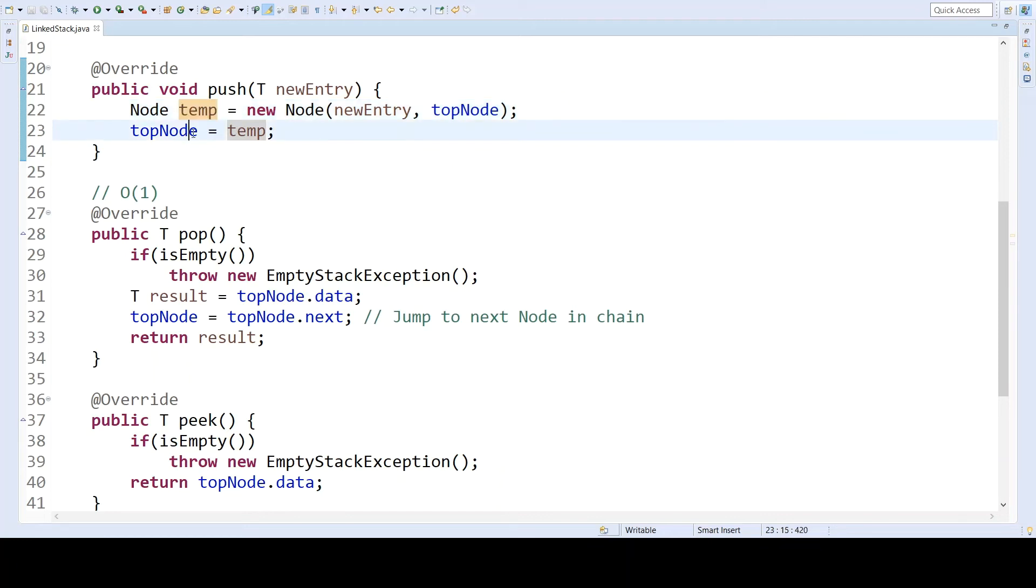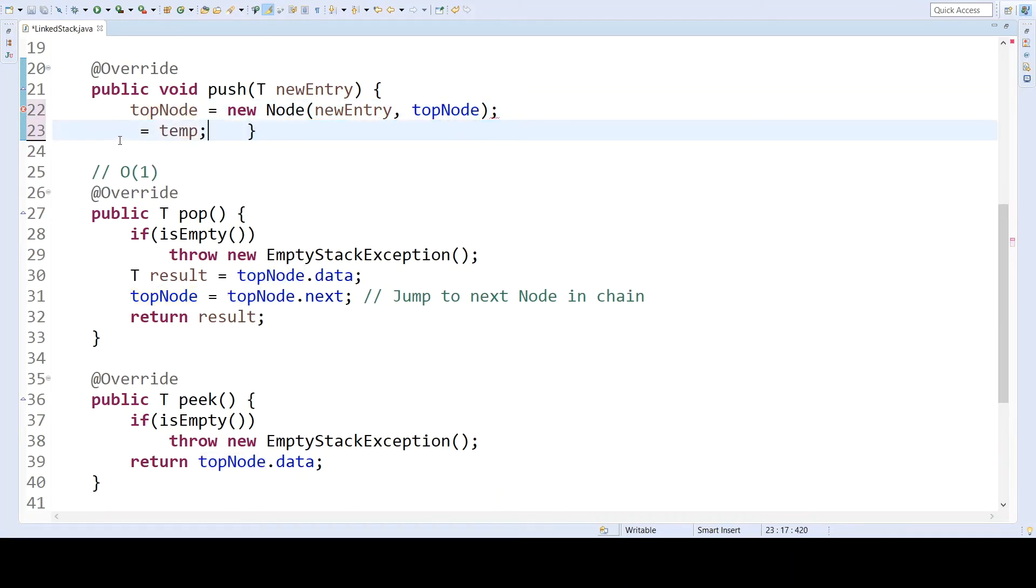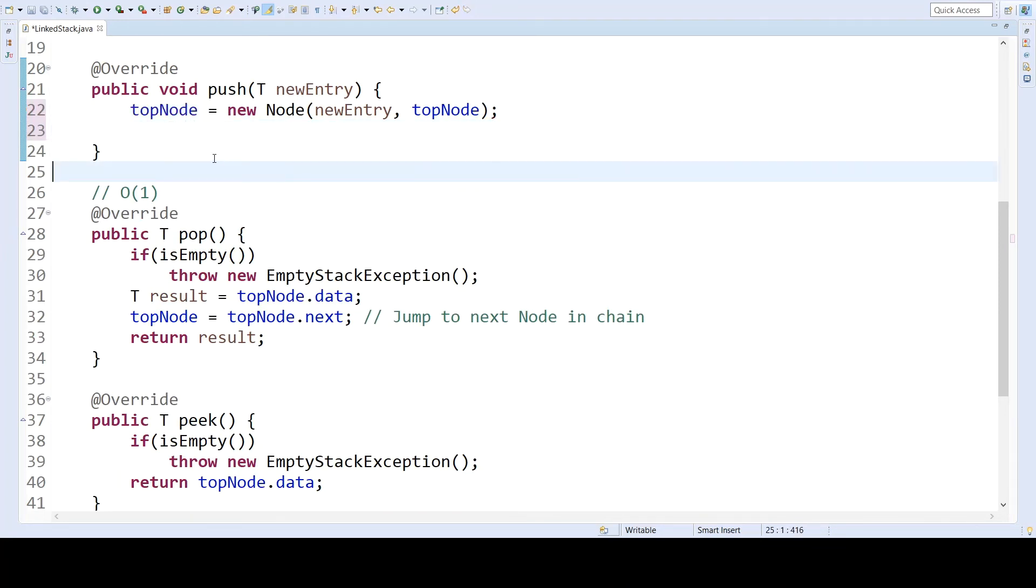In fact, we could simply do this in one step, like this, because of the evaluation order. So what we see here is that top node will be evaluated when this node is constructed, but then it will be reassigned to this new value here. And so this works identically to what we had before. It just has one less temporary variable in it.